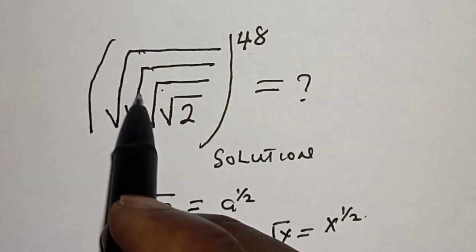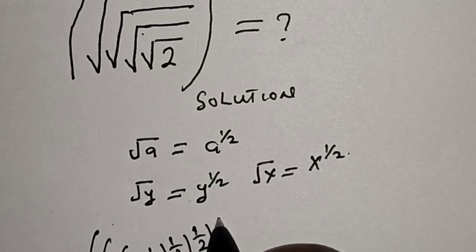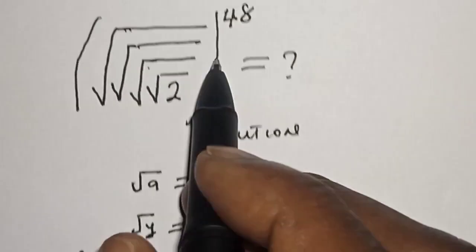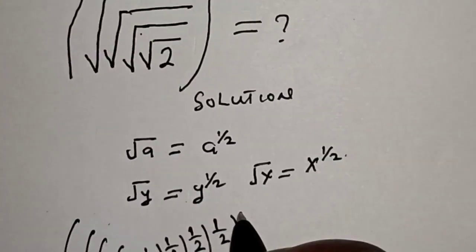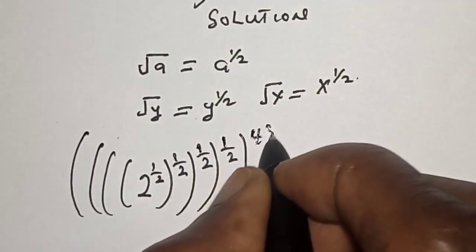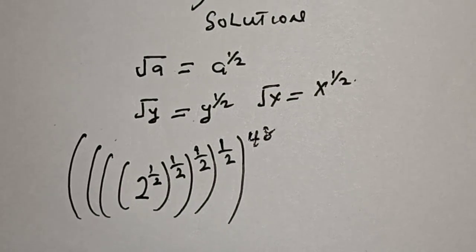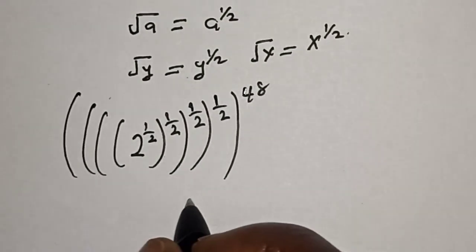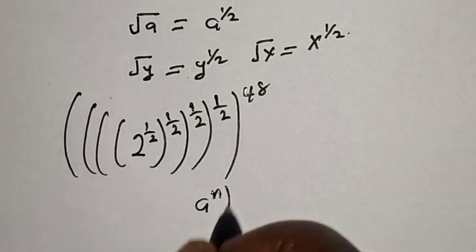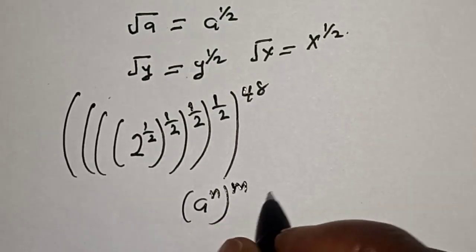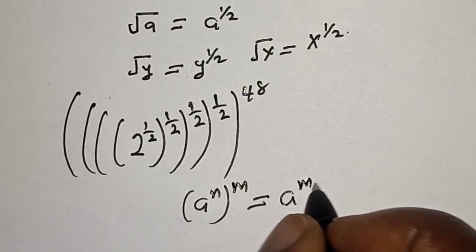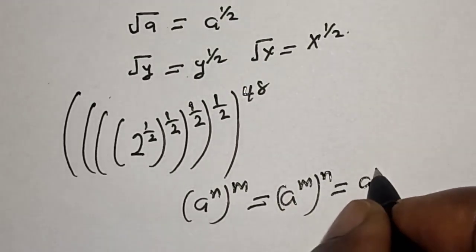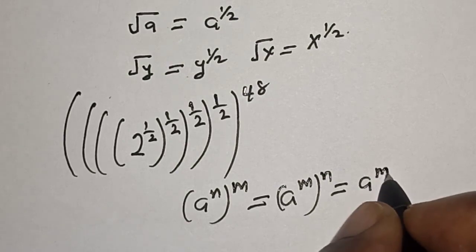Then with this last root, raised to power 1 over 2. Then all raised to power 1 over 2. Now remember this exponential rule: a raised to power n raised to power m is equal to a raised to power m raised to power n, which is equal to a raised to power m times n.